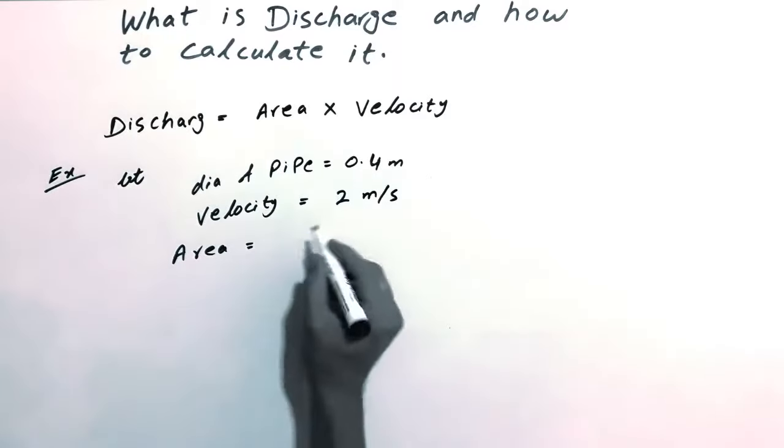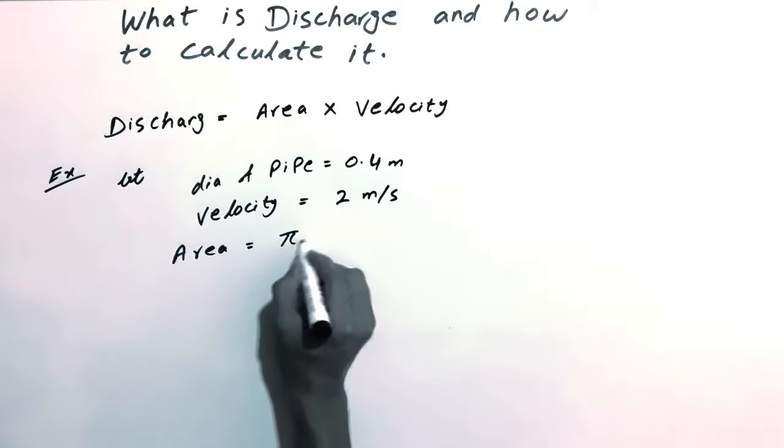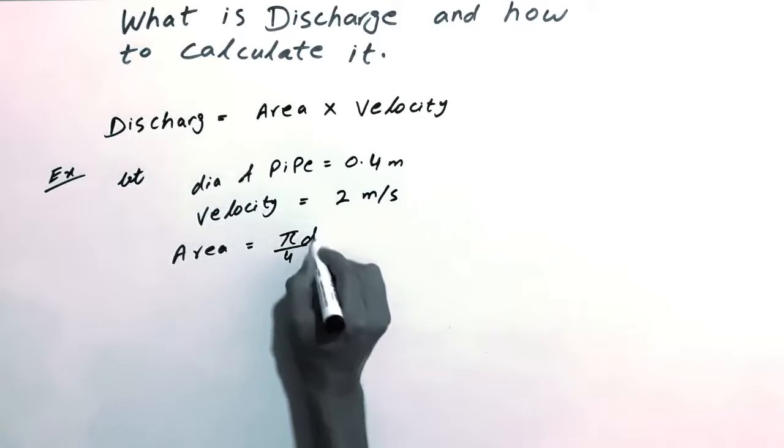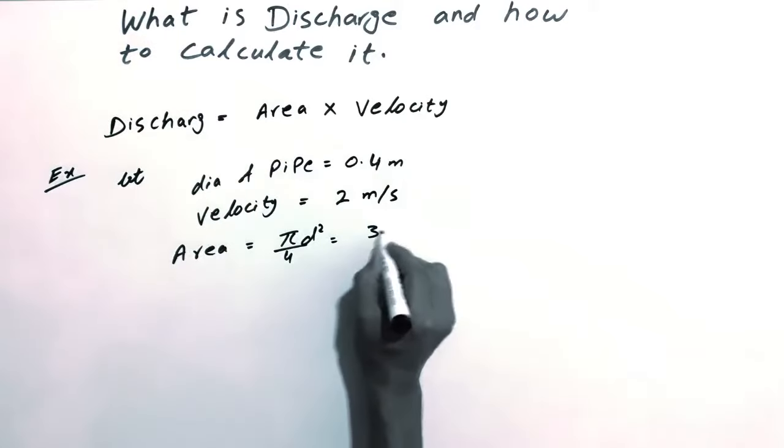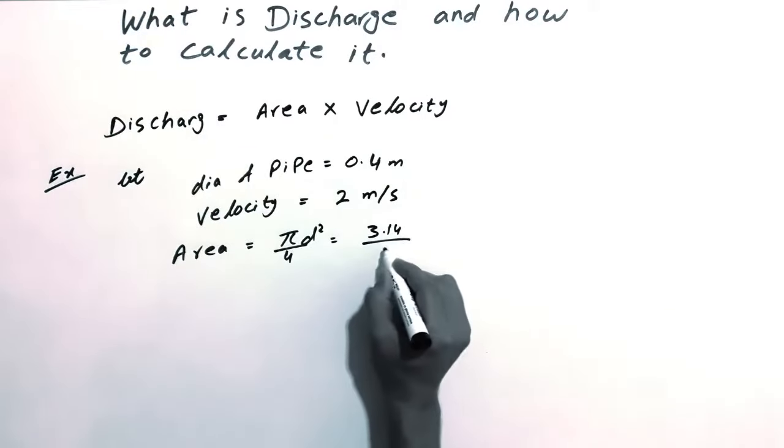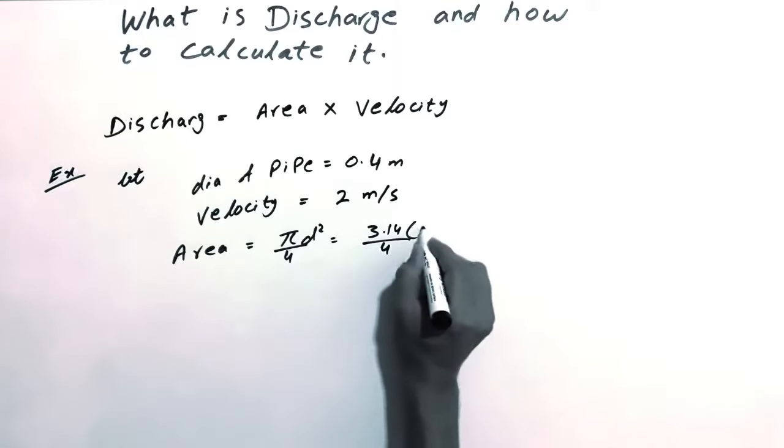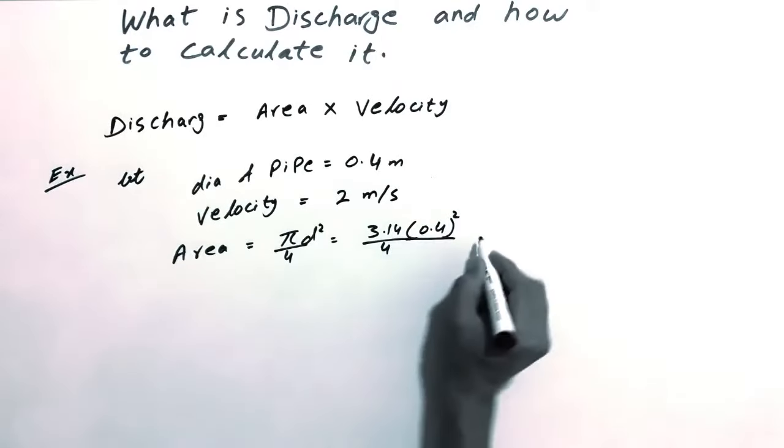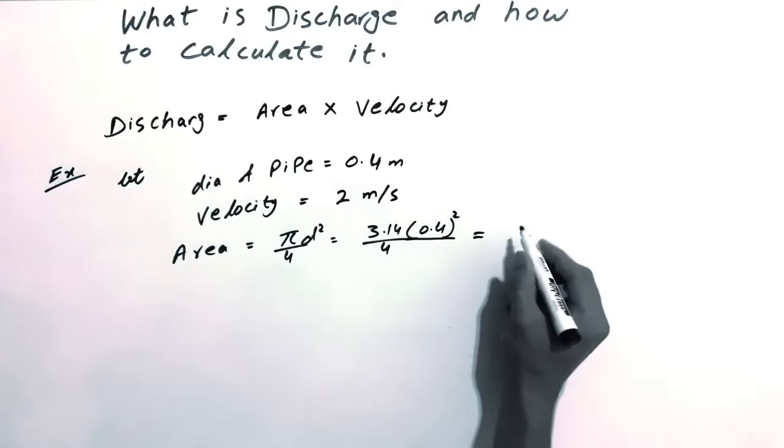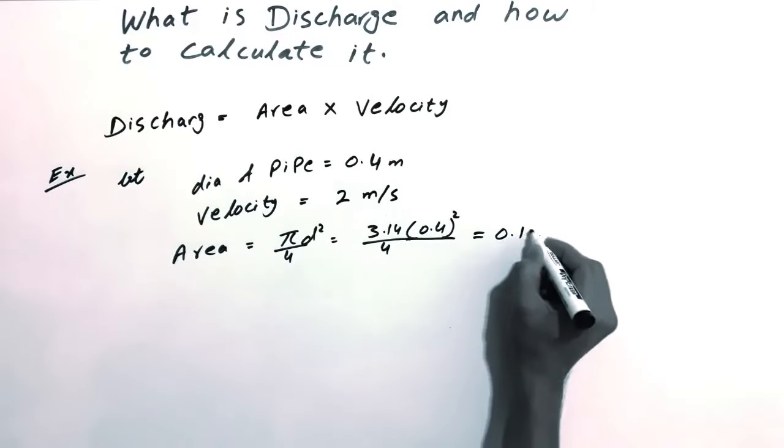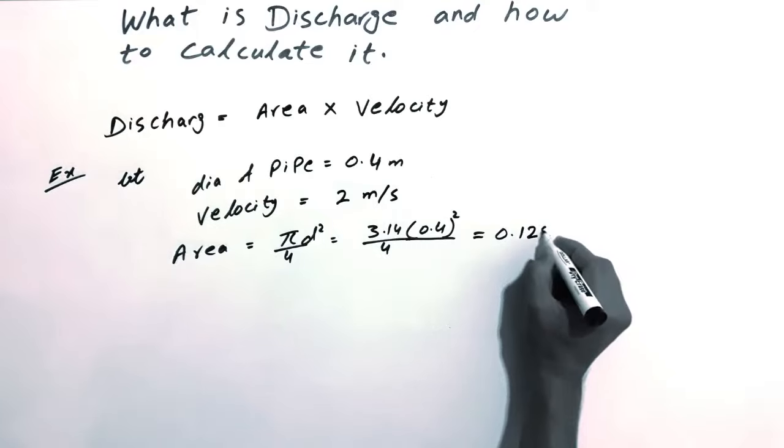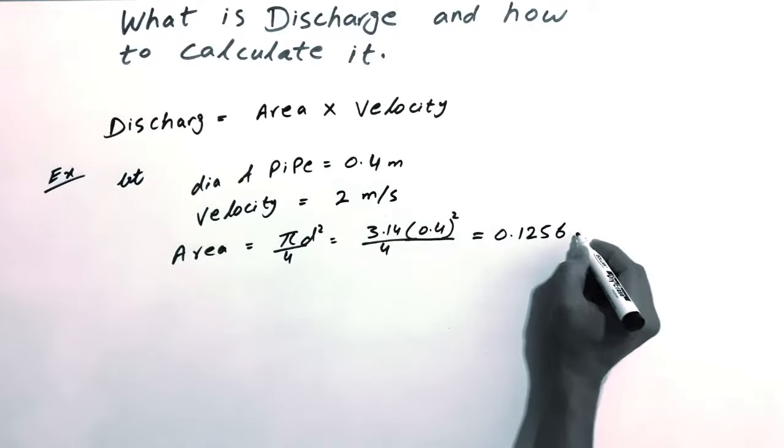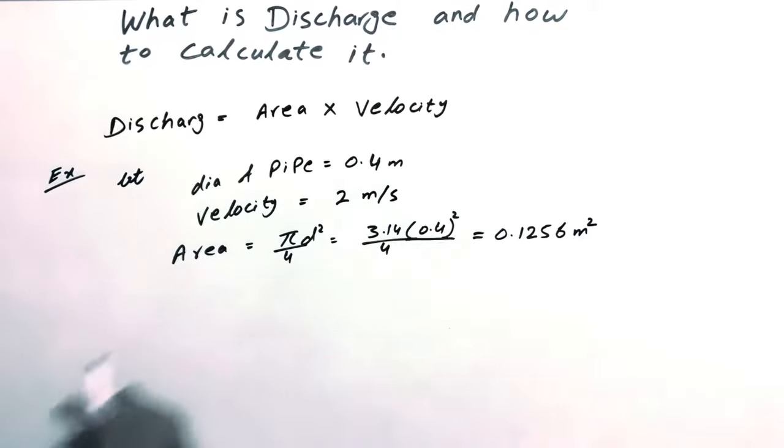In our case, we have a circular pipe, so the area of a circle is π/4 times d squared. That's 3.14 divided by 4, multiplied by 0.4 squared, so the area we get is 0.1256 square meters.